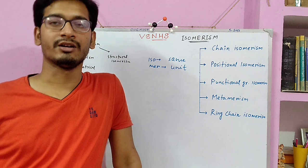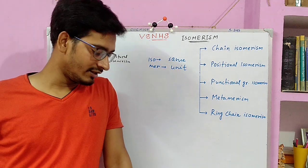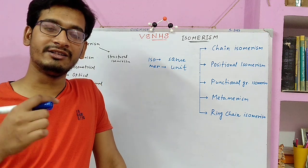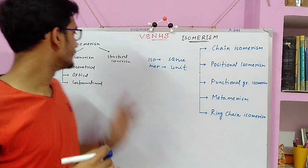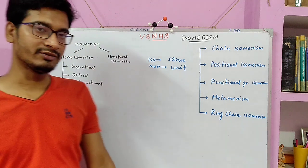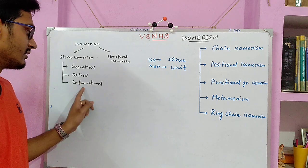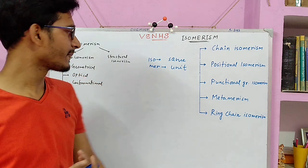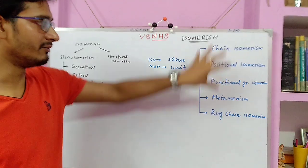The five types of structural isomerism are: chain isomerism, positional isomerism, functional group isomerism, metamerism, and ring-chain isomerism. On the other hand, stereoisomerism is defined as when organic compounds have the same molecular formula and same bonding connectivity but different orientation of ligands in space. Stereoisomerism is classified into geometrical isomerism, optical isomerism, and conformational isomerism. We will focus on structural isomerism here.